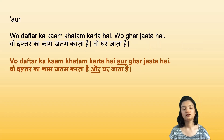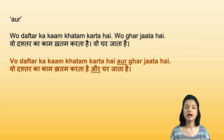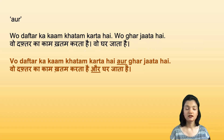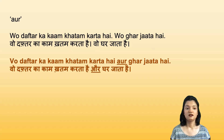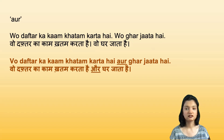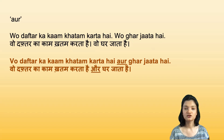The first way to join sentences is to add 'aur', which is a conjunction meaning 'and'. Our sentence is: 'wo daftar ka kaam khatam karta hai, wo ghar jata hai.' Daftar means office, daftar ka kaam means office work. You can't translate directly — you have to add 'ka' there. Ka translates to apostrophe-s or 'of', so daftar ka kaam is office work.